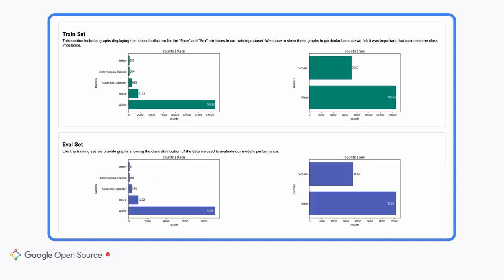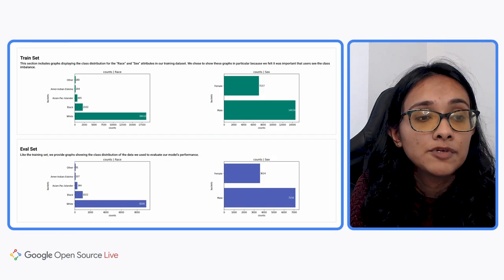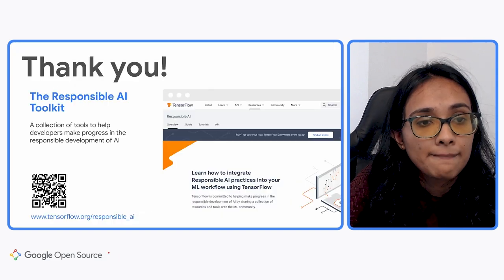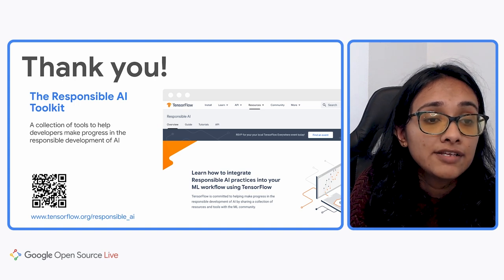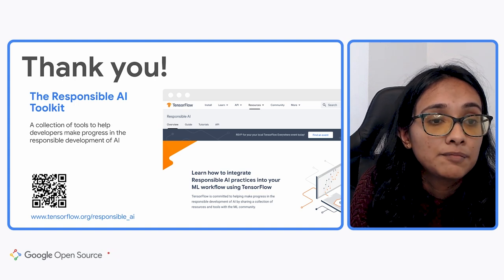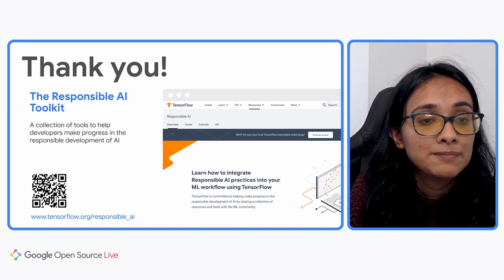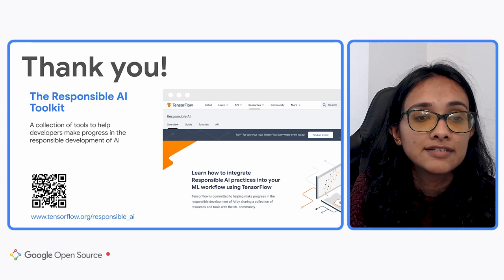Here's an example model card for the restaurant sentiment model that highlights key use cases, limitations, and ethical considerations. It also talks about who built the model and how. You can share details about how your data was curated, how the model was trained, and on what subgroups and slices your model was evaluated. We recommend using model cards every time you publish your model to the world. Please be sure to check out the Responsible AI Toolkit on our website for more resources and tutorials.